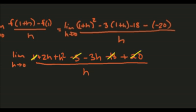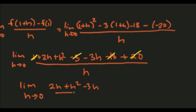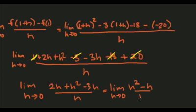So now all that you're left with is 2h plus h squared minus 3h over h. Combine your like terms and you get h squared minus h over h.